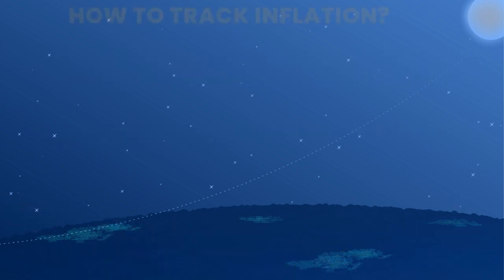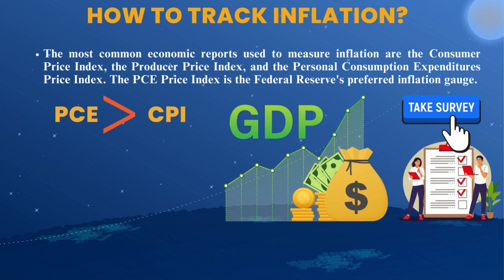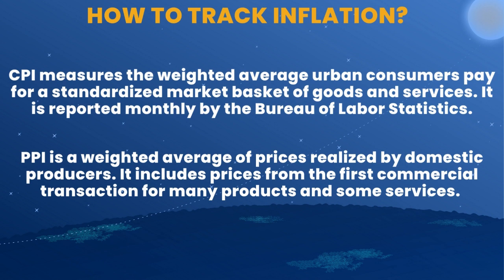Next, we shall see how to track inflation. The most common economic reports used to measure inflation are the Consumer Price Index, the Producer Price Index, and the Personal Consumption Expenditures price index. The PCE price index is the Federal Reserve's preferred inflation gauge. The PCE is a broader measure than the CPI, and is weighted based on consumption measures used to derive the gross domestic product rather than on a household spending survey as the CPI. CPI measures the weighted average urban consumers pay for a standardized market basket of goods and services, reported monthly by the Bureau of Labor Statistics. PPI is a weighted average of prices realized by domestic producers, including prices from the first commercial transaction for many products and some services.